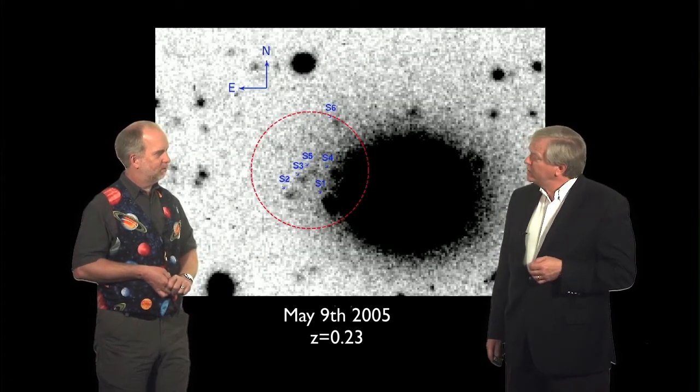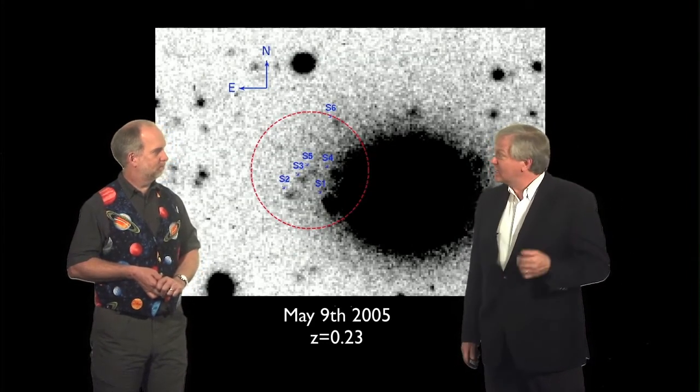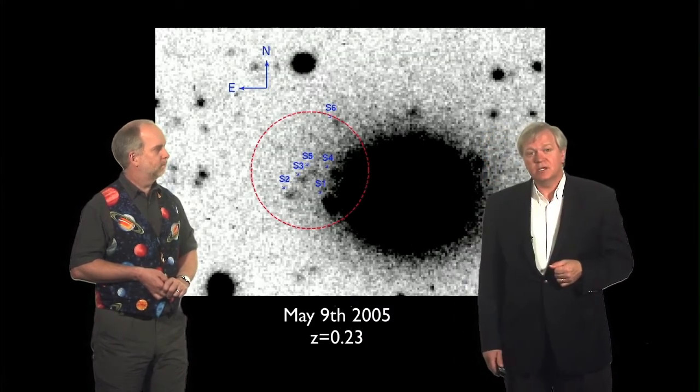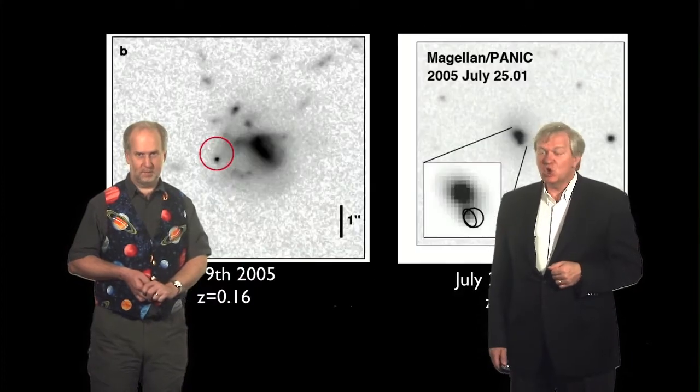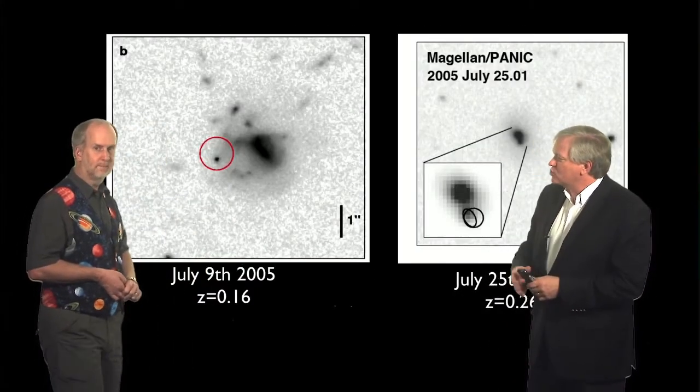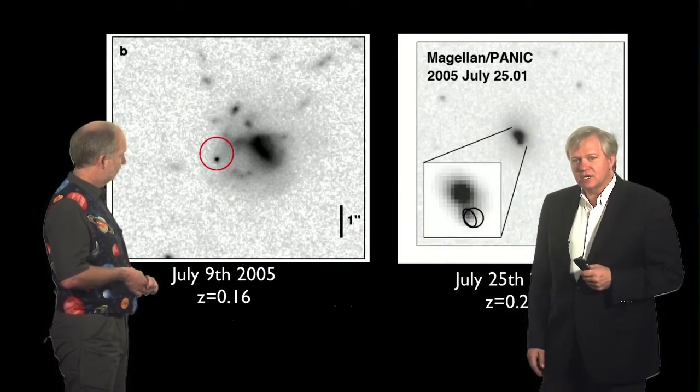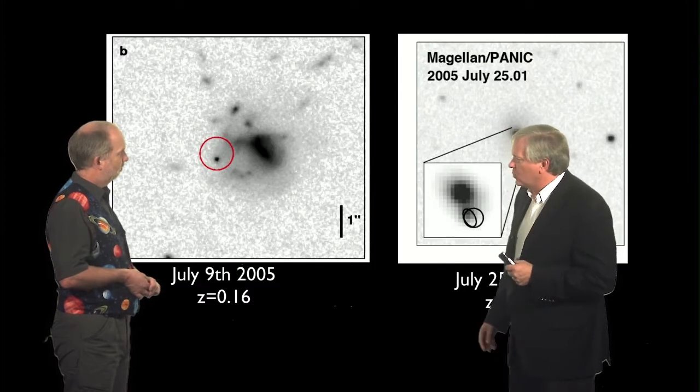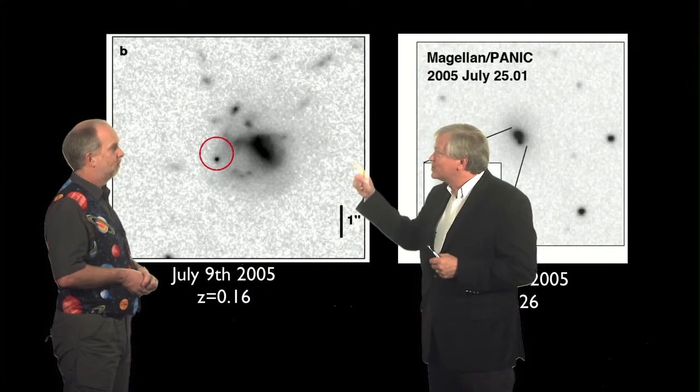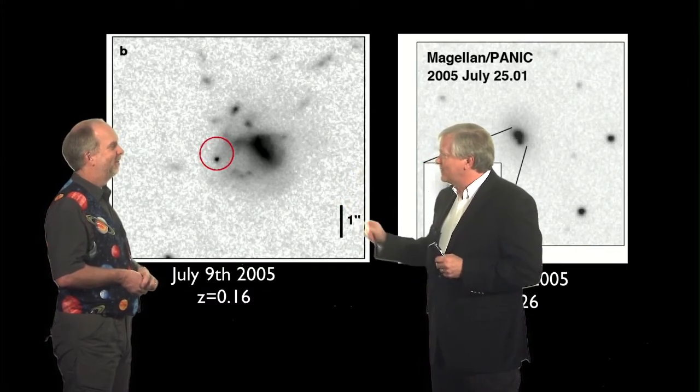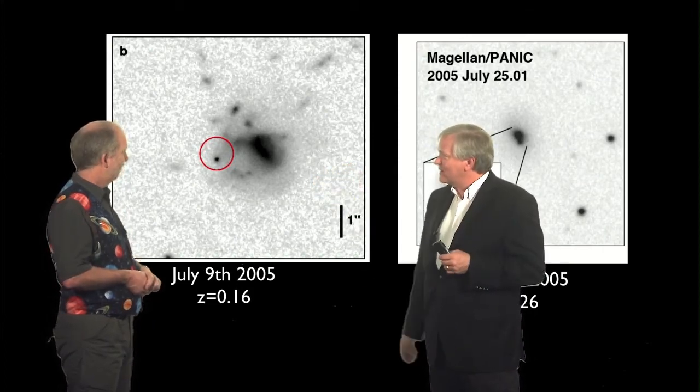So what we needed to do was to simply wait, because Swift was able to detect these short hard bursts on a regular basis, and when we waited until July, then we got to see two. So the first one, the next one, the second one we were able to look at was on July the 9th, and this object turned up at a redshift of 0.16, and I should actually say this object was detected by HETI-2. This is the only short hard burst it ever detected. It took three or four years after it was launched to be found, but it found one just after Swift was launched.